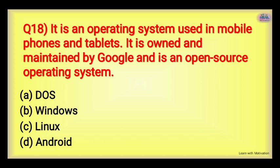Next: Dash is an operating system used in mobiles and tablets. It is owned and maintained by Google, and it is an open-source operating system with no single particular owner — it comes in all mobiles. Options: DOS, Windows, Linux, or Android. The right answer is Android — that is why we say 'Android mobile.'